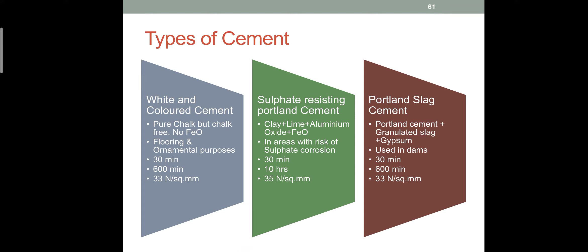Portland slag cement is normal cement with slag added to it. It is mainly used for dams, where very large concrete volumes are involved and heat is generated very highly from the cement. Slag is steel industry waste that is added to the cement to reduce heat generation. That is Portland slag cement.